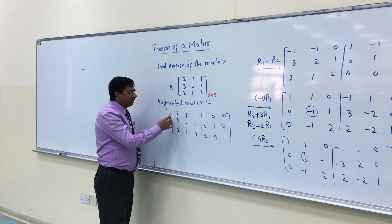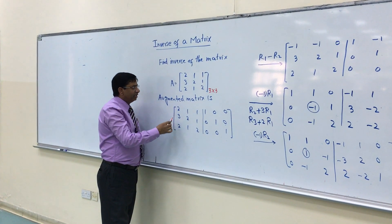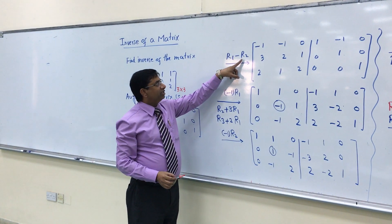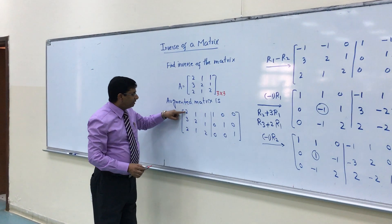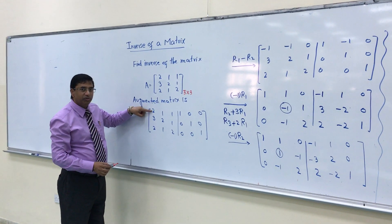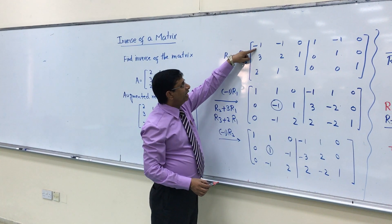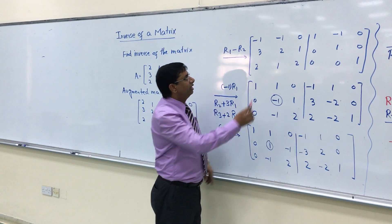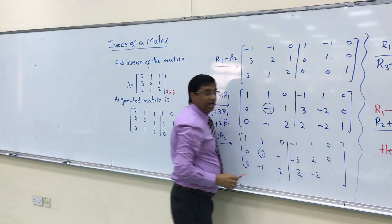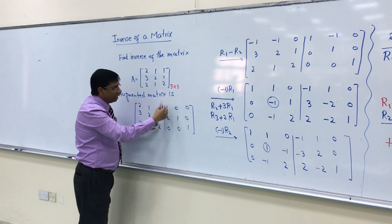For this, we want a 1 here. The first entry in the first row must be 1. For this, we write R1 minus R2 — that is, we subtract the second row from the first row. Remember, the operation we are applying here, the same operation we are applying on the identity matrix part.